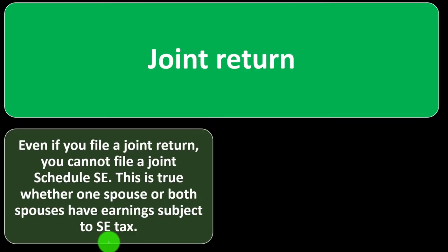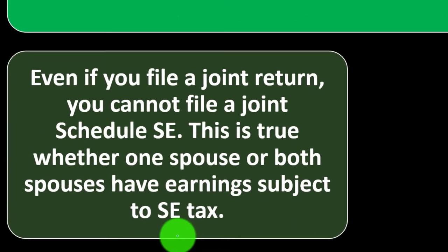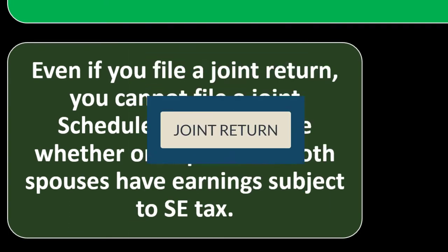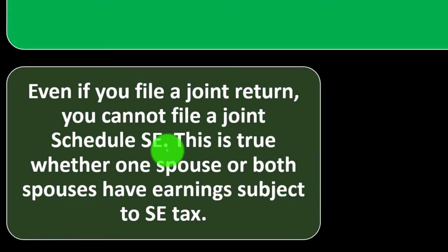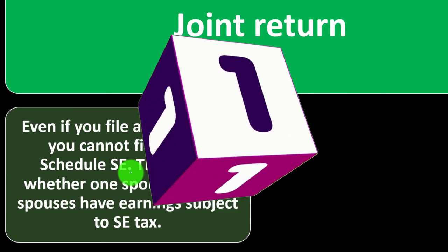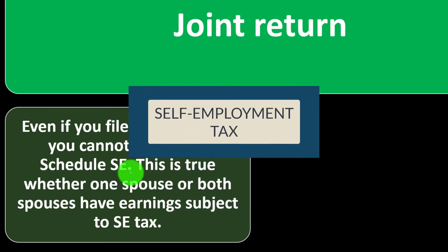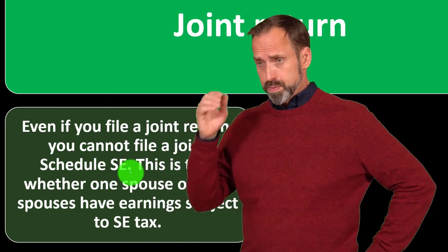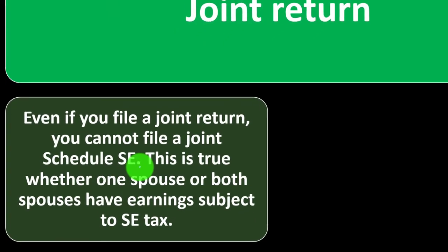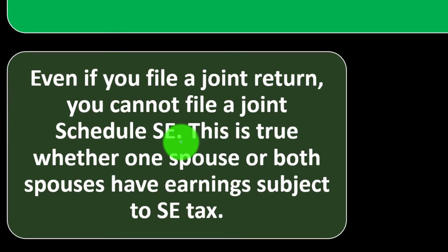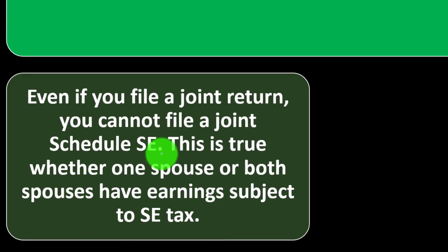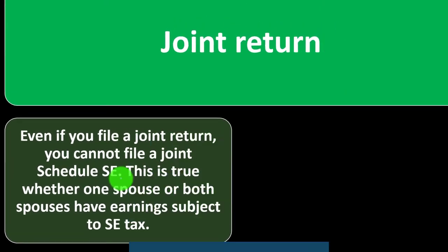Regarding a joint return — even if you file a joint return, you cannot file a joint Schedule SE. You might think you can combine everything into one self-employment tax, but the problem is that even with married individuals, the government needs to track whose Social Security number to apply the contributions to, since that affects the benefits each individual will receive.